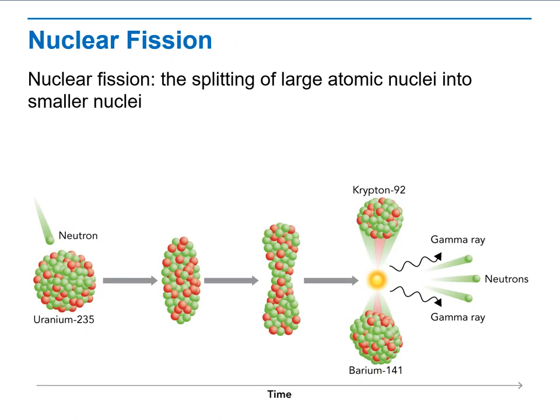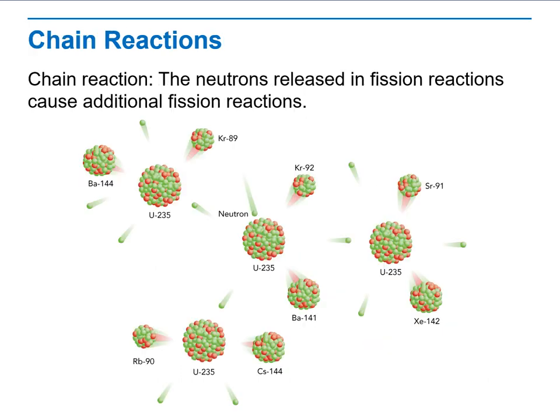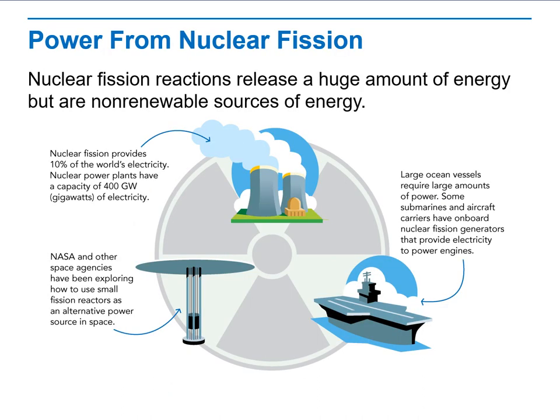Then we will discuss nuclear fission. What is it? The splitting of large atomic nuclei into smaller nuclei. A nucleus in which the binding of one extra neutron provides enough energy to cause the nucleus to split apart. A chain reaction is when the neutrons released in a fission reaction cause additional fission reactions.